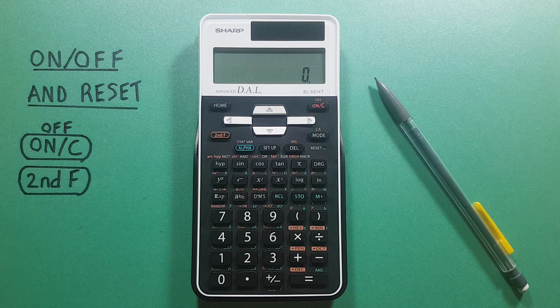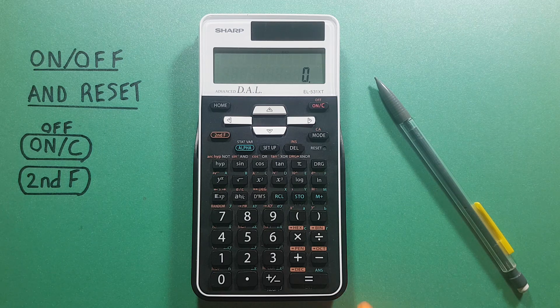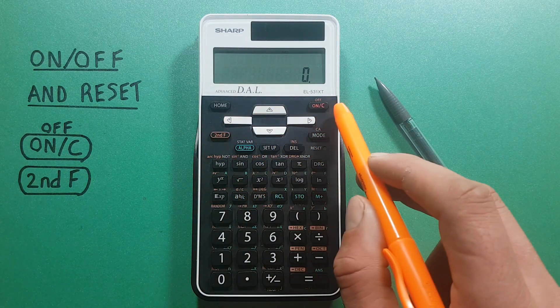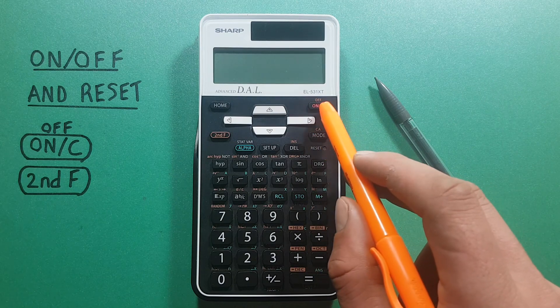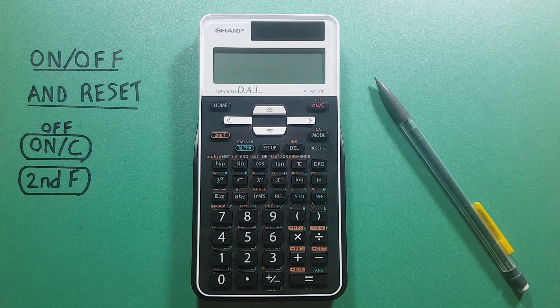All right, so we do our work, and if we want to turn it off to conserve battery, we use the second function of the on button. So that's second function, on, which is the off function, and our calculator is now off and conserving battery.